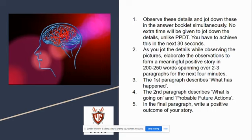When you see a picture, you have to observe what is going on so that you can see the theme. You have to achieve this in the next 30 seconds. As you jot down the details, you have to observe and make a meaningful positive story.